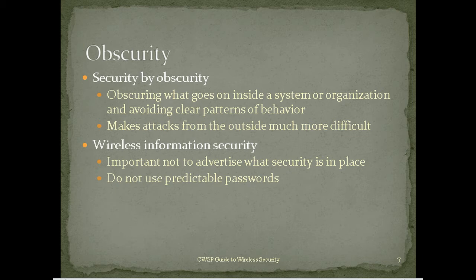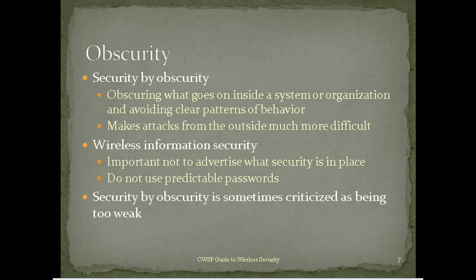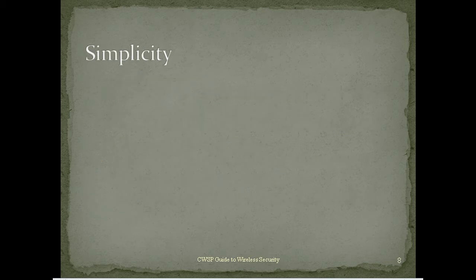For wireless information security, don't advertise what security is in place and don't use predictable passwords. Software can assign random passwords to users, though that probably means they'll write them down — if they keep them secret, that's okay. One thing to consider: when companies advertise job openings, they list the skills and equipment they're looking for, which can reveal what an individual company has in place. Security by obscurity is too weak to be the only thing you rely on, but it can be one component of your overall security strategy.